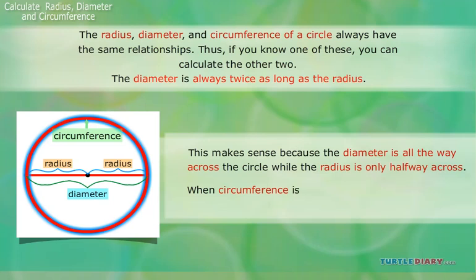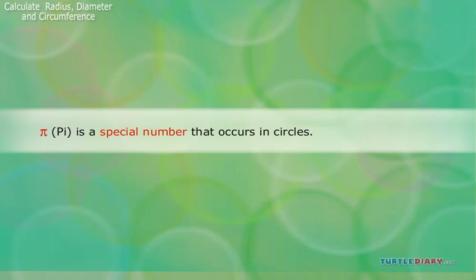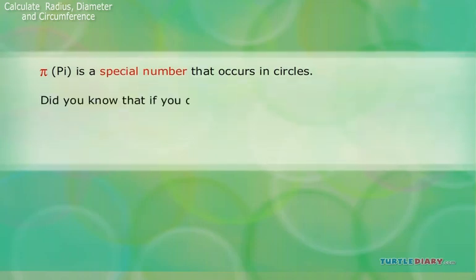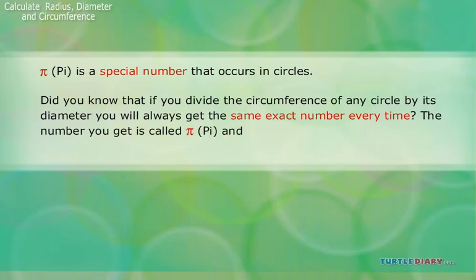When circumference is involved, the relationship is a little bit more complex because of the number pi. Pi is a special number that occurs in circles. Did you know that if you divide the circumference of any circle by its diameter, you will always get the same exact number every time? The number you get is called pi and is approximately equal to 3.14.